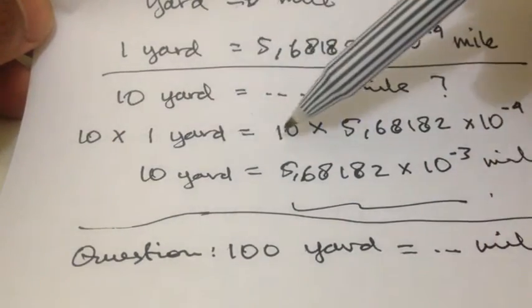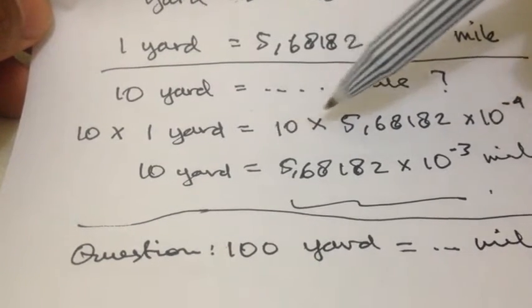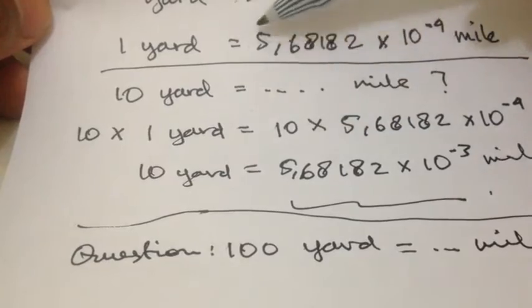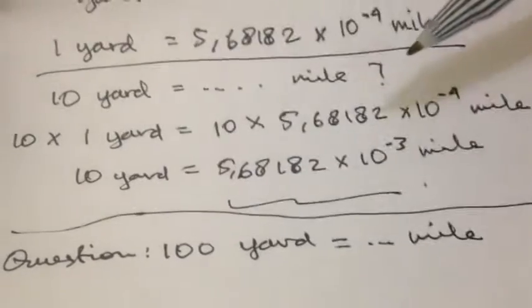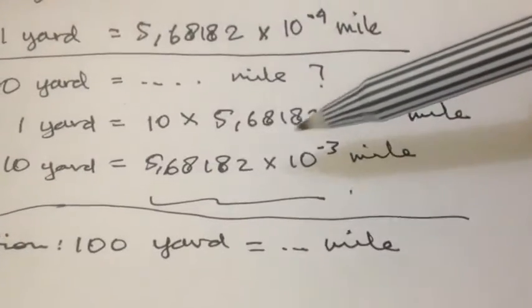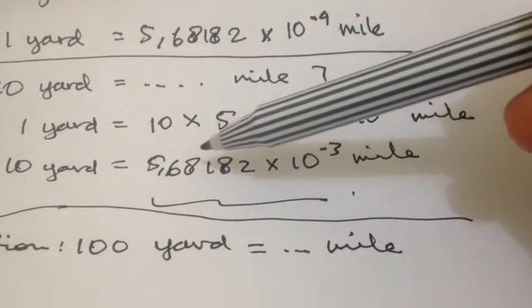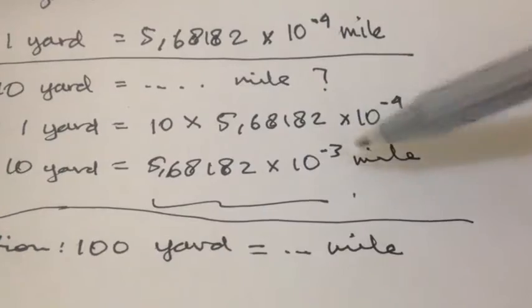Because we have 10 left, we should have 10 in the right, so we put it 10 and then we multiply this 10 with this number. And then 10 yard is equal to 5.68182 multiplied with 10 power minus 3 mile. That's the answer.